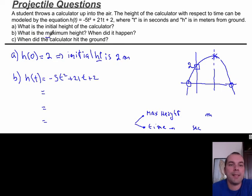Part b, what is the maximum height? When did it happen? Basically, I'm looking for the vertex. Will I get the zeros axis of symmetry, plug it in? No, it's in standard form. I'm just going to go ahead and complete the square.